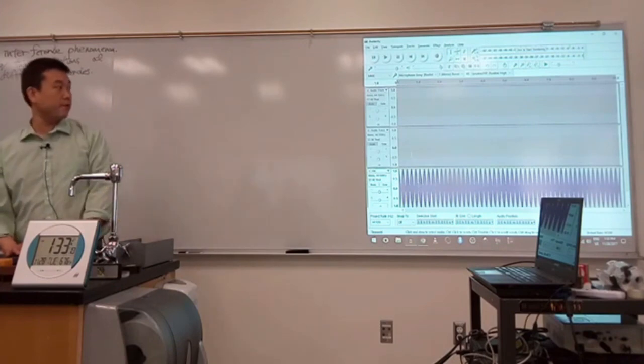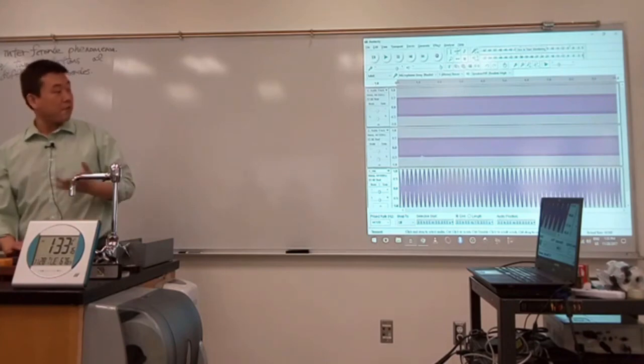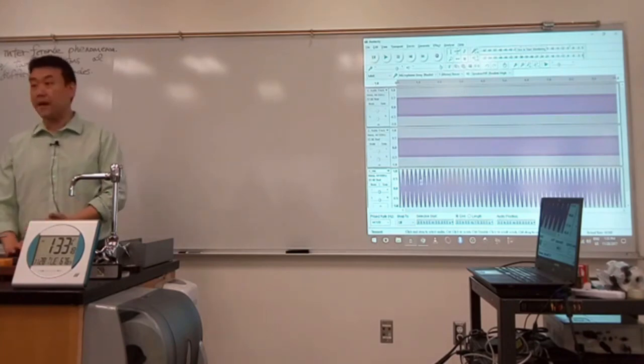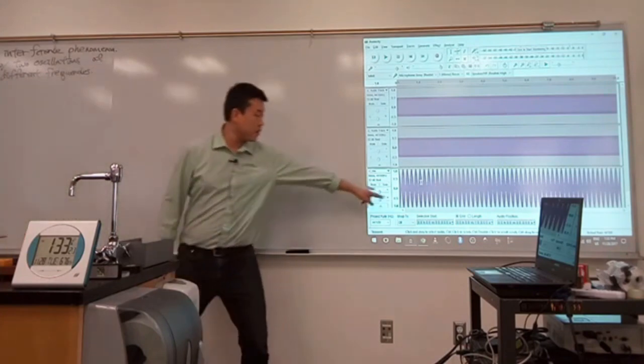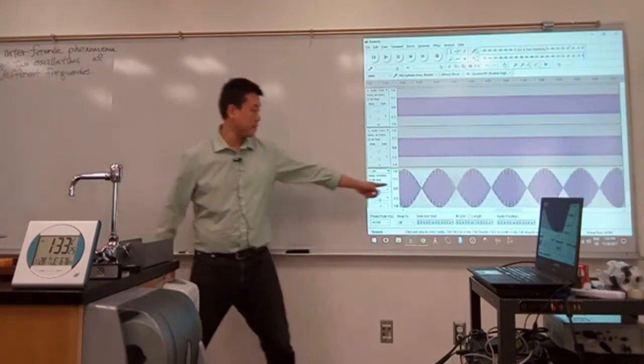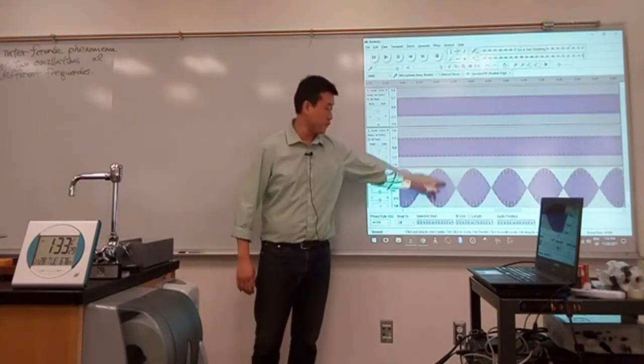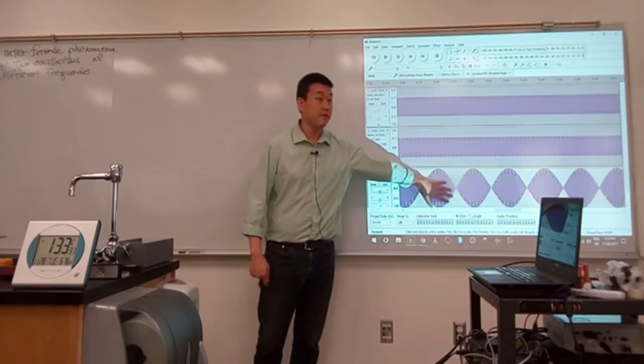It's the result of interference between two waves of a slightly different frequency. And what I want to show is mathematically, analytically, that you get a shape that looks like this. Like a wave that's inside an envelope, so that its amplitude of oscillation is changing at some regular rate.